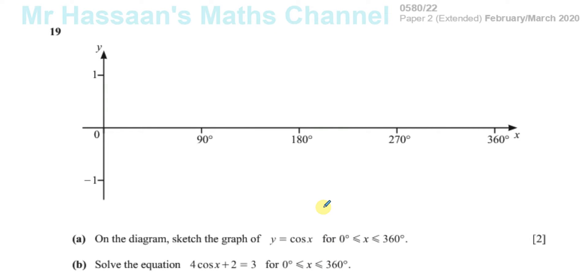Okay, welcome back to Mr Hassan's Math Channel. Question number 19 from the International GCSE Paper 2, February/March 2020. Here we have a question about drawing a sketch of the cosine curve y = cos x between 0° and 360°.